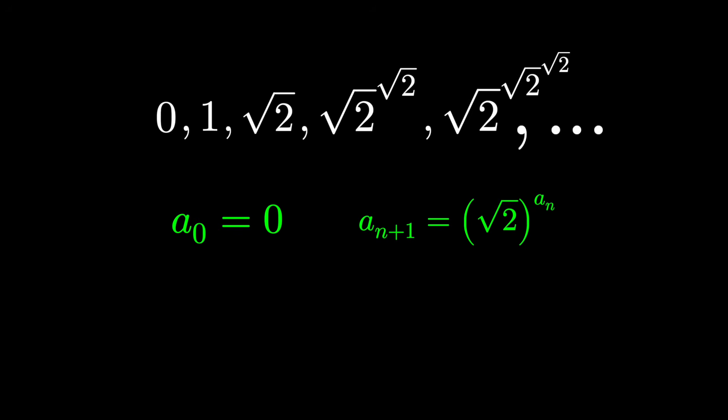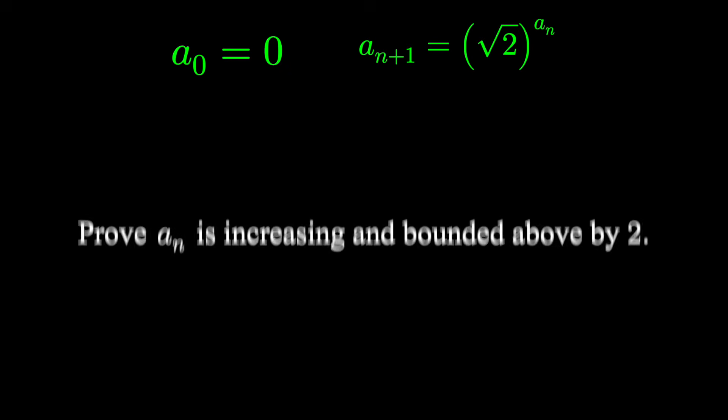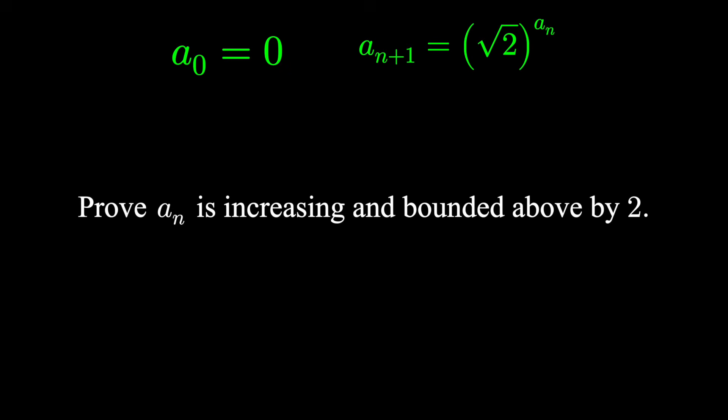If this sequence converges, it converges to 2 as we saw before. How do we prove a sequence converges? One way is to show it's both monotonically increasing and bounded above. If it's bounded above by some number, in this case 2, and it's always increasing towards 2, it must converge at 2. All the values must pile up at 2. Our task is twofold.